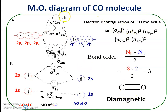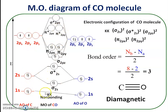To summarize the highlighting facts about carbon monoxide: it is formed by combining two different atoms — carbon and oxygen — with different electronegativities, oxygen being more electronegative. Therefore, atomic orbitals of oxygen have lower energy than those of carbon. In CO, all electrons are paired, making it diamagnetic, and its bond order is 3. These are the key points of the MO diagram for carbon monoxide.